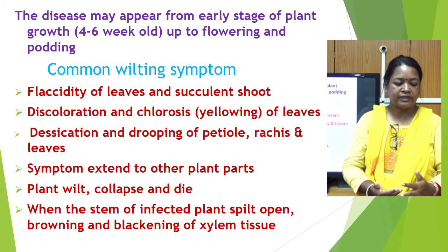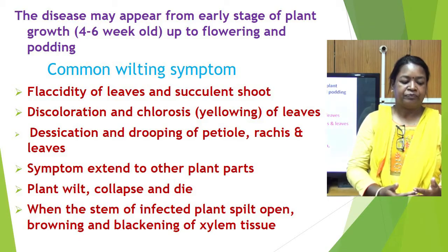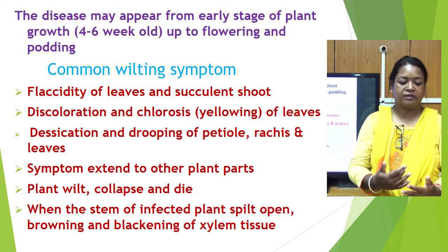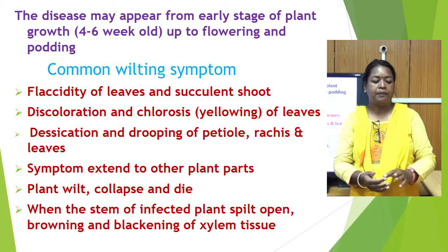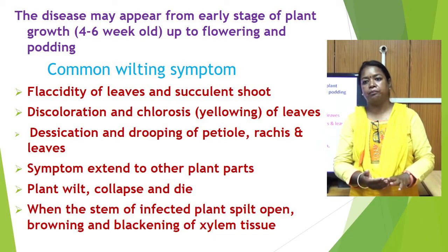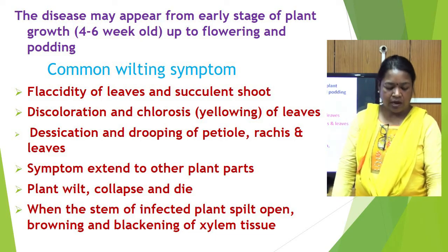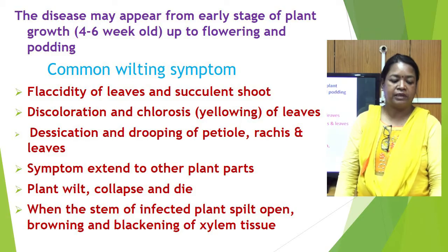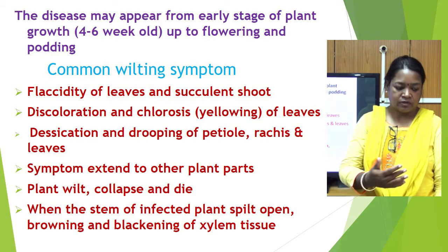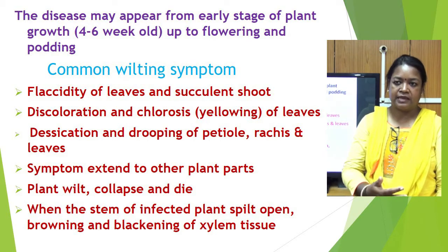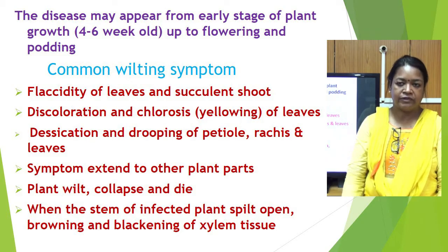When the stem of the affected plant is split open, browning or blackening of xylem tissue is visible. This blackening of the xylem vessel is the characteristic symptom of the disease.